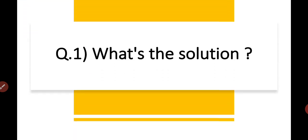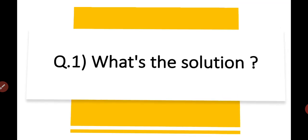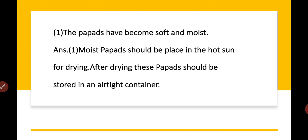The first question is: what is the solution? The papas have become soft and moist. The answer is the papas should be placed in the hot sun for drying. After drying, these papas should be stored in an airtight container.